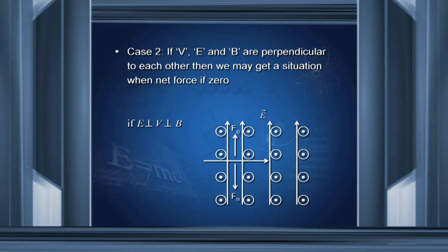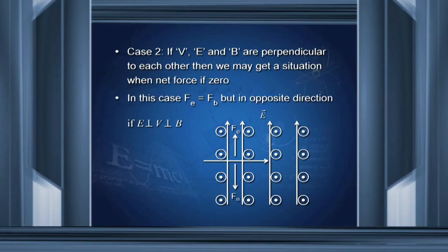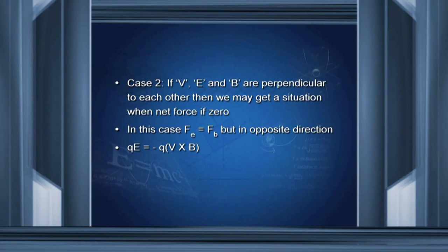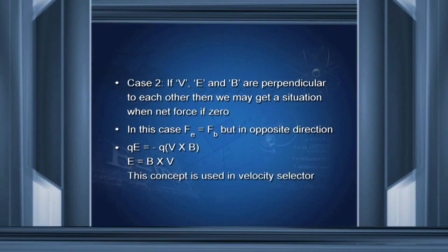Situation two: if velocity, electric field, and magnetic field are perpendicular to each other, we may get a situation where the net force is zero. In this case, the force due to the electric field equals the force due to the magnetic field, but both forces are in opposite directions. Substituting values, Q into E equals minus Q into V cross B. Cancelling Q from both sides, electric field E equals minus V cross B, that means E equals B cross V. This concept is used in the velocity selector.